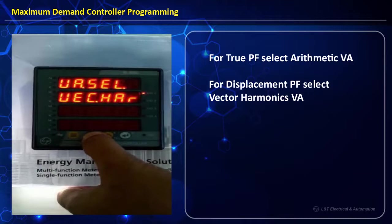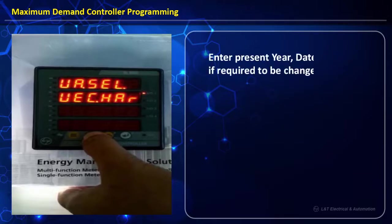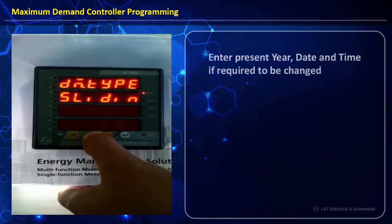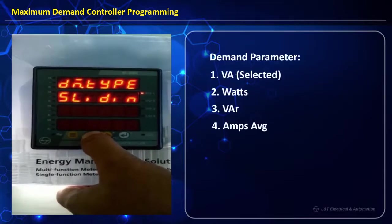Using the VA selection method: for vector harmonics, power factor will be displayed as displacement power factor; if we select automatic VA, power factor will be shown as true power factor. We can program date, time, and year based on requirements. We also have demand type selectable as sliding window or block method, depending upon the type of demand type in the EB meter.